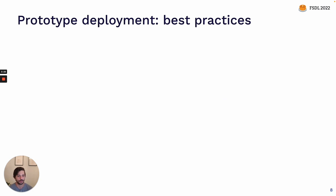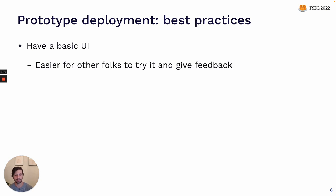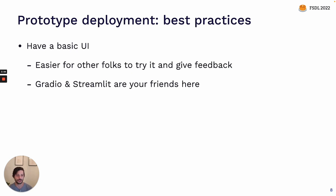A few best practices to think about when deploying the prototype model. First, I would encourage you to have a basic UI for the model, not just an API. The reason for that is, the goal at this stage is to play around with the model, get feedback on it, both yourself and also from friends, coworkers, or whoever you're talking with about this project. Gradio and Streamlit are really your friends here — with Gradio it's often as easy as adding a couple of lines of code to create a simple interface.